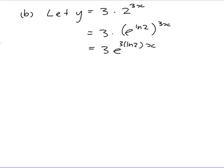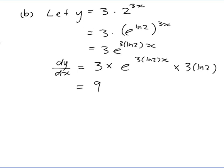Now I can differentiate using the chain rule. dy/dx: the 3 out the front stays as a constant, and I multiply by the derivative of e to the (3 ln 2)x. The derivative of e to the x is just e to the x, so I keep e to the (3 ln 2)x, then multiply by the derivative of what's inside — which is just the constant 3 ln 2. Simplifying, I get 9 ln 2 times e to the (3 ln 2)x, and since e to the (3 ln 2)x is actually 2 to the 3x, I'll put that back so it looks like the original function.